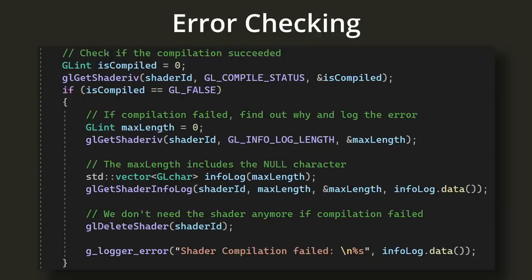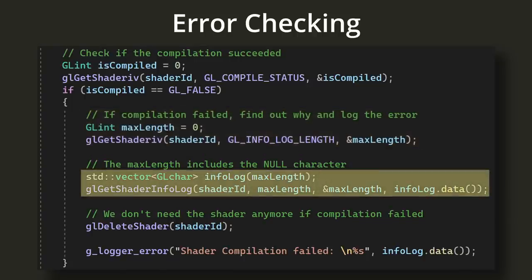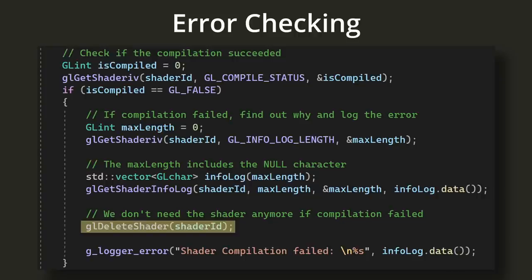For error handling, we use glGetShaderiv with the GL_COMPILE_STATUS flag to check if compilation succeeded. If it failed, we ask OpenGL how long the error message string is, allocate enough memory, and call glGetShaderInfoLog to retrieve the message. We then make sure to delete the shader — if compilation fails, there's no way to use it and no sense keeping it in GPU memory.